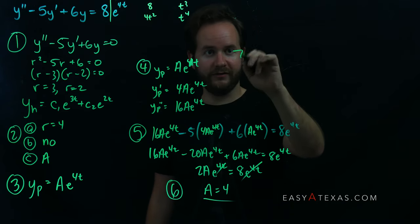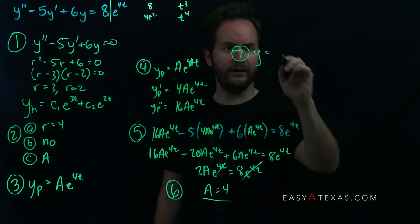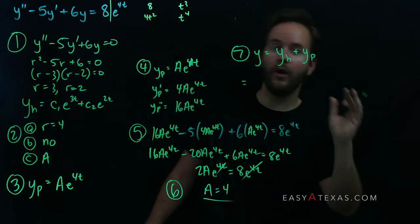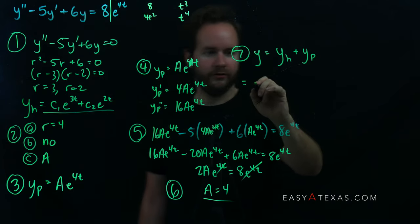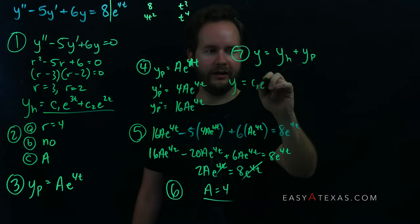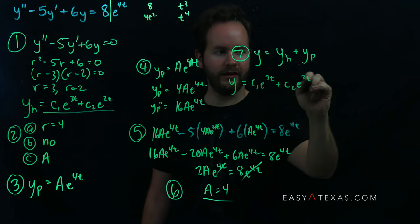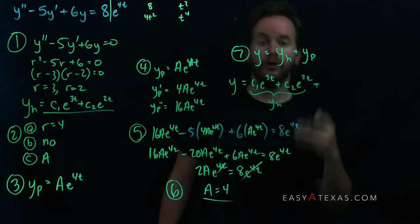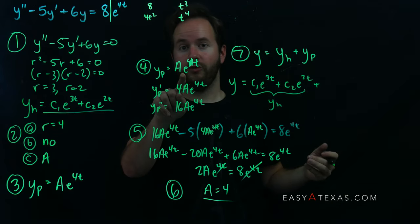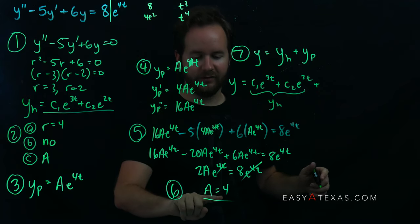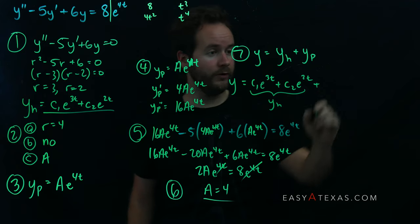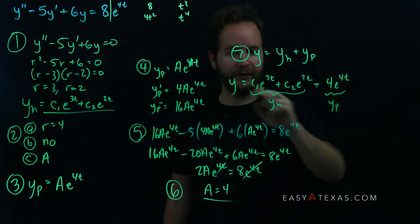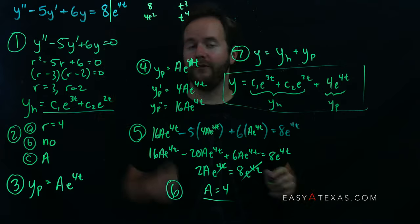Step 7, the final answer: y = yh + yp. Our homogeneous was c1·e^(3t) + c2·e^(2t), and our particular solution was a·e^(4t) with a equals 4, so yp = 4e^(4t). The complete general solution is y = c1·e^(3t) + c2·e^(2t) + 4e^(4t).